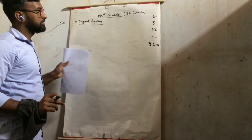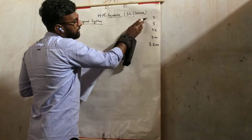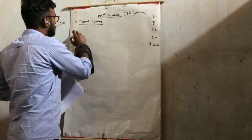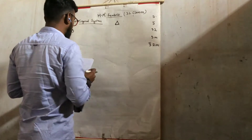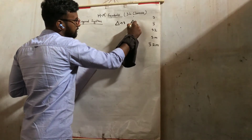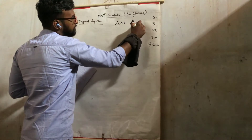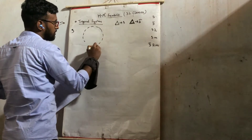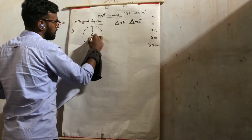We have a trigonal system that is part of the hexagonal system, and in this system we have five classes: 3, 3-bar, 3 2, 3M, and 3-bar 2M. The symbol for 3-fold rotation is a triangle, and for 3-bar we have a circle with a peace sign in the middle. For 3, we will draw the circle with a 3-fold axis.